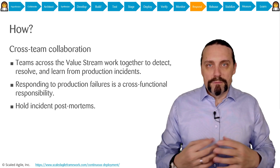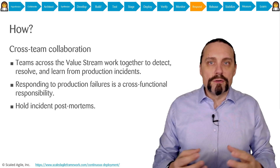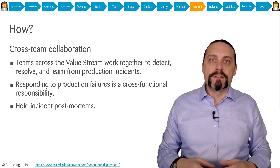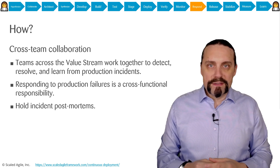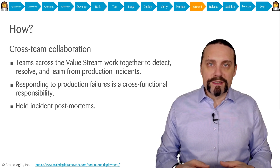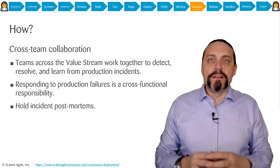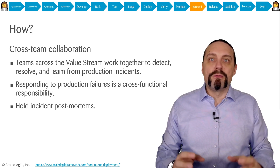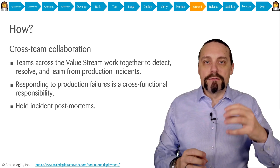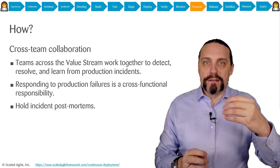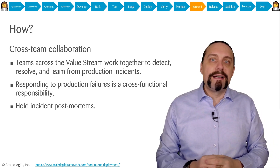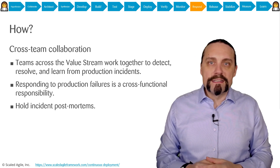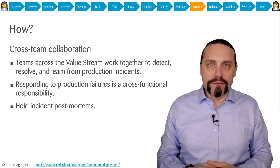What we want is so-called cross-team collaboration. If something happens in production, everybody tries to fix the problem together — they detect it, analyze it together, and resolve these production issues together.